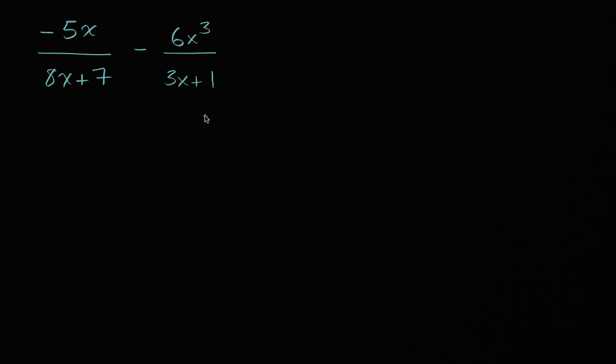A common denominator is one that is going to be divisible by either of these, and then we can multiply them by an appropriate expression or a number so that it becomes the common denominator. So the easiest common denominator I can think of, especially because these two expressions have no factors in common, would just be their product.